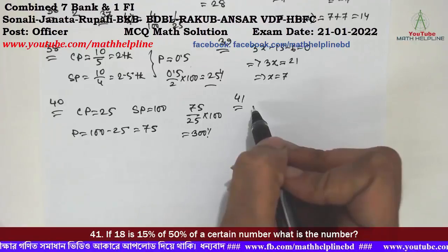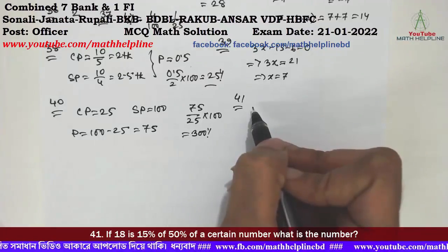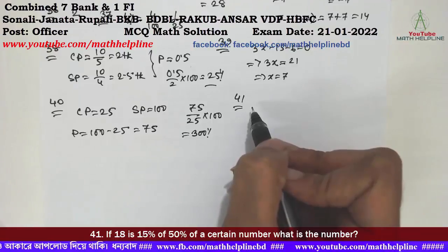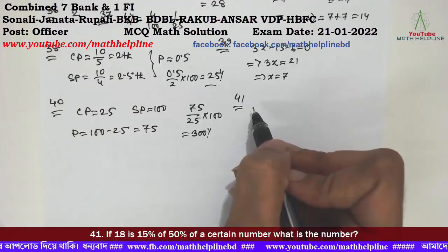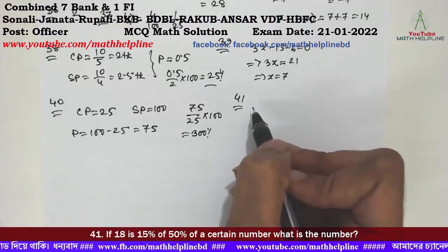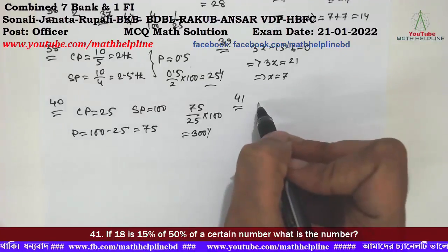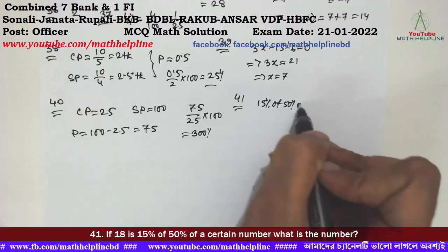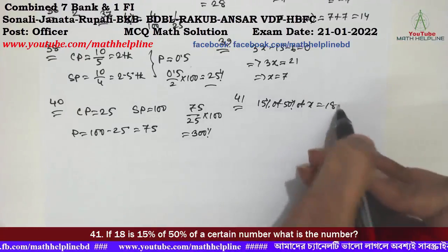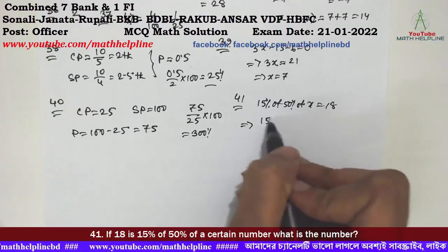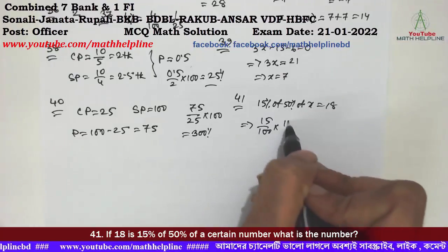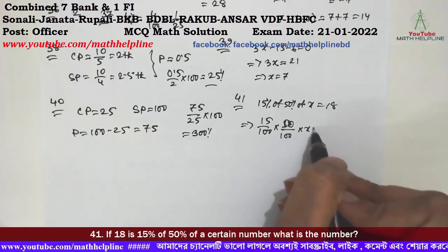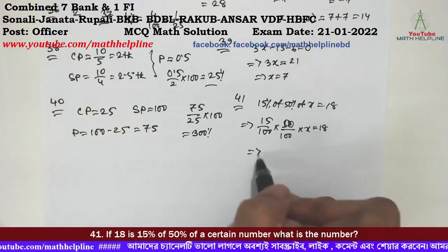Number 41: If 8 is 15% of 50% of a certain number, what is the number? So 15 by 100 times 50 by 100 times x equals 18. Solving, x equals 24.